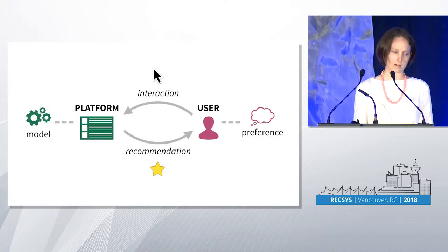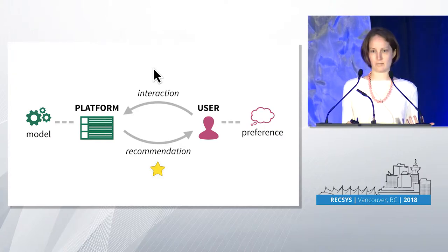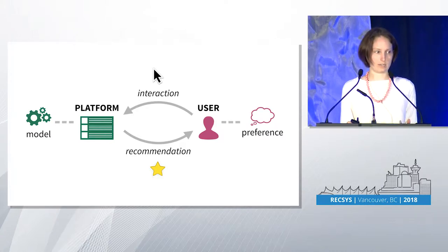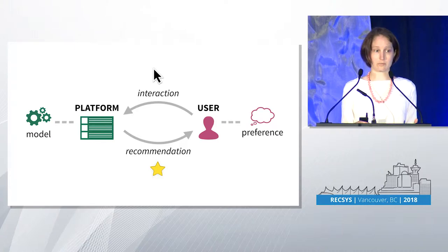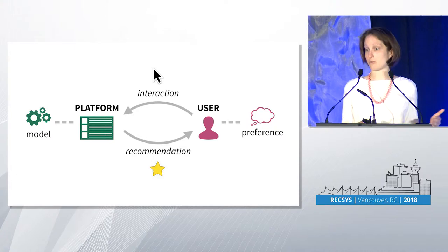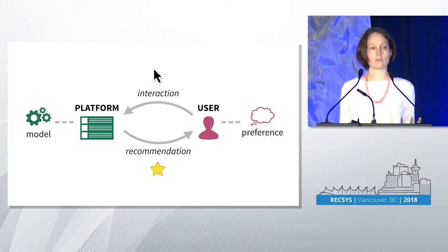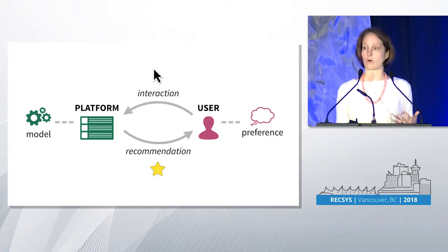I want to talk about this feedback loop. Oftentimes in recommendation systems, we have a recommendation system platform that provides recommendations to users. Users then interact with those recommendations. Sometimes we use those interactions to evaluate other recommendation systems, or to retrain our models, passing through this feedback loop again. That can pose problems because we're treating those interactions as if they are ground truth in terms of what the user actually wants, when in reality they're confounded by the algorithms already deployed in our systems.